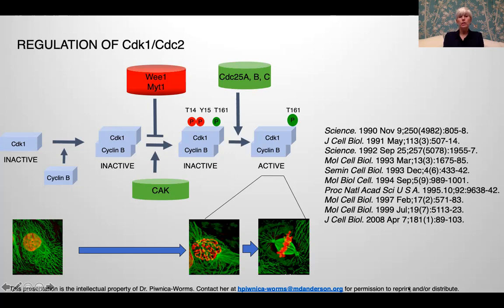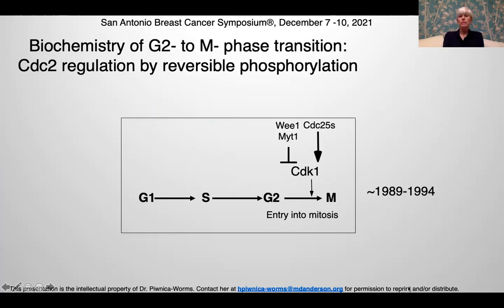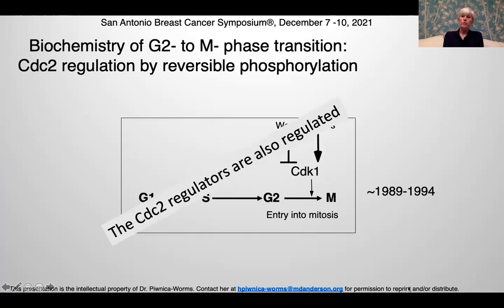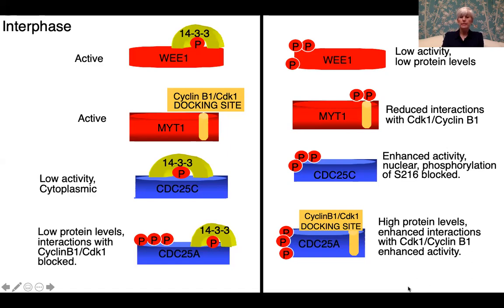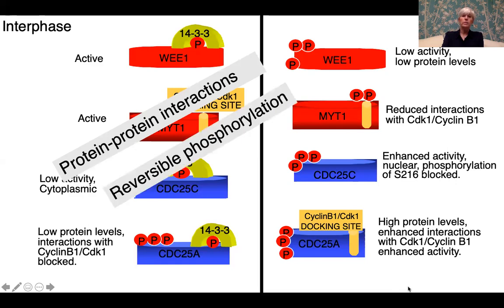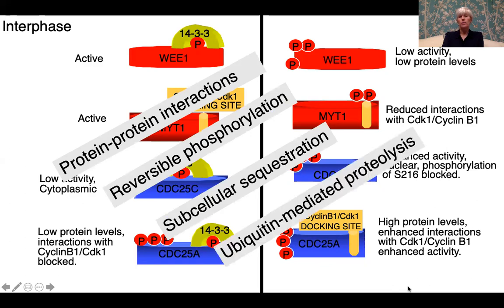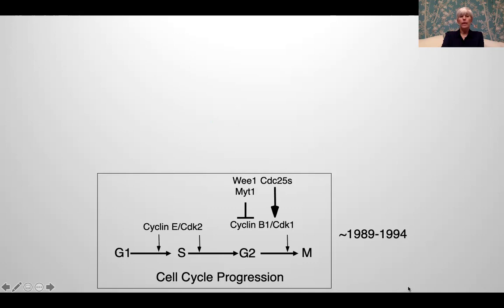In fission yeast, there's one CDC25; in humans, there are three. My early career was focused on elucidating the biochemistry of the G2 to M phase transition, and then we turned to really trying to understand how the regulators are regulated. We found several mechanisms: regulation at the level of protein-protein interactions, reversible phosphorylation, subcellular sequestration, and ubiquitin-mediated proteolysis. We had a nice understanding of how cell cycle progression was regulated during a normal cell cycle.